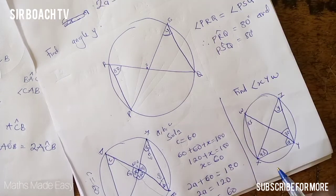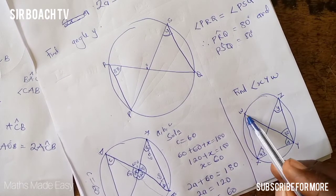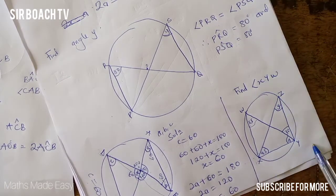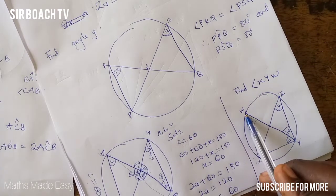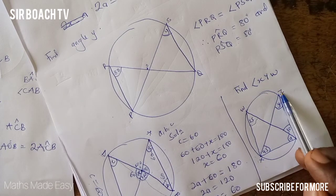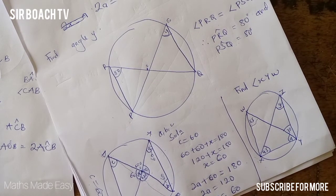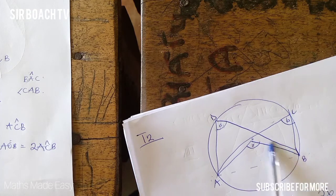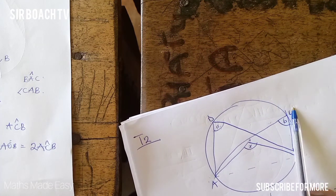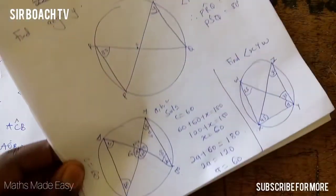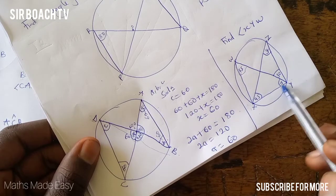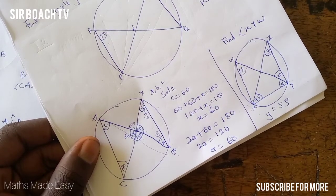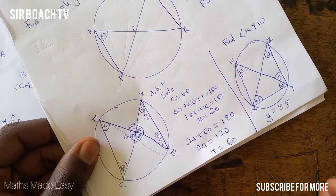Now try this practice question. You can see that a chord is here subtending an angle of 55 degrees to this side. The same chord XY is moving points to the circumference — we have 55 here, and the same chord moves a point to another position on the circumference where we have Y. From theorem two, if a chord subtends angles to two points on the same side of the circumference, those angles are equal, so Y equals 55 degrees. But please show your working and explain why it is 55.